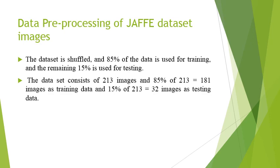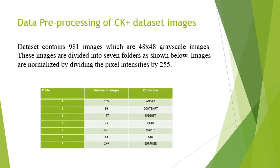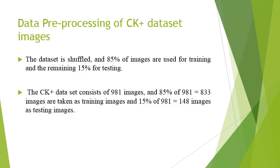85 percent of the JAFFE dataset is used for training the model and 15 percent for testing. Similarly, the same data pre-processing is done on the CK+ dataset, but here the expressions are different — there is an extra expression called contempt. Just like the JAFFE dataset, 85 percent of the CK+ dataset is used for training the CNN and the remaining 15 percent for testing.